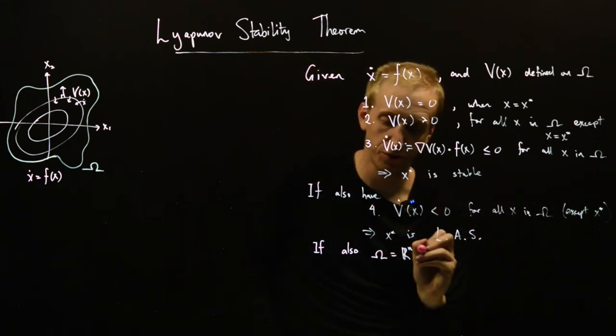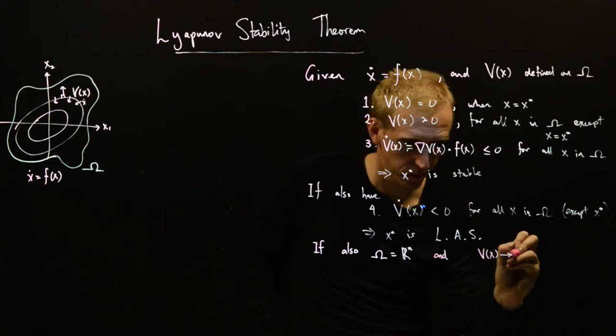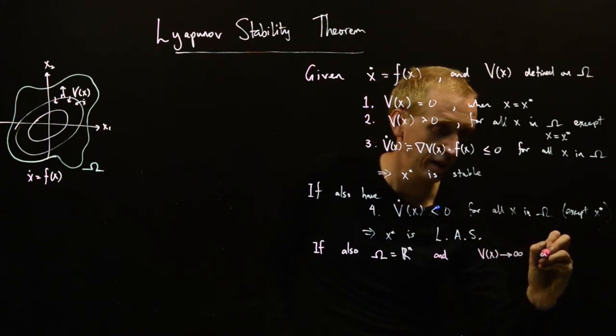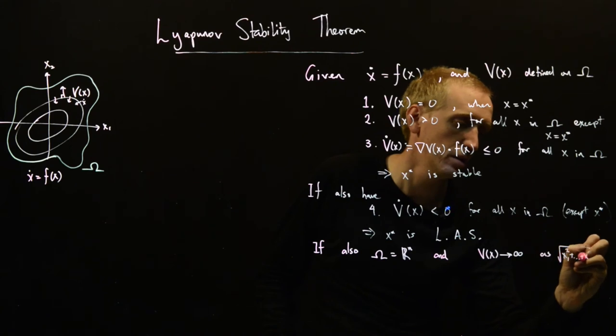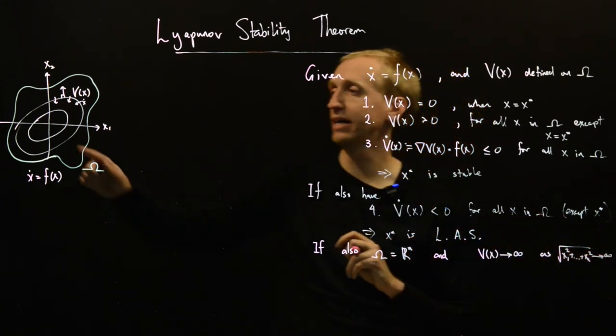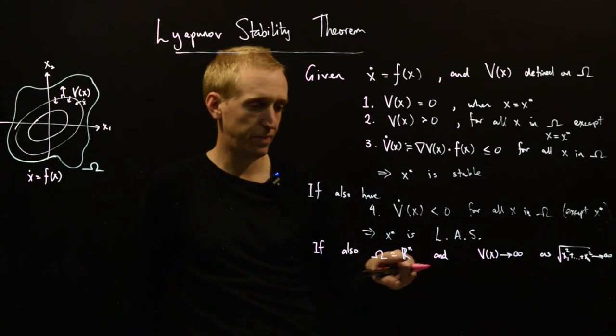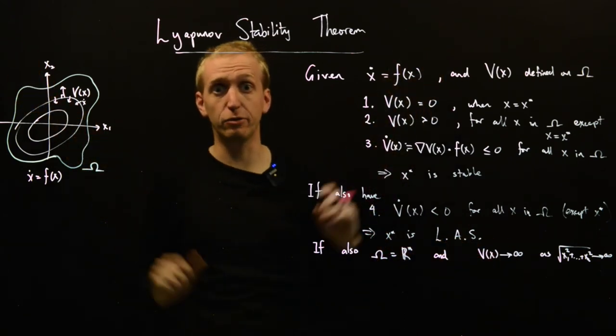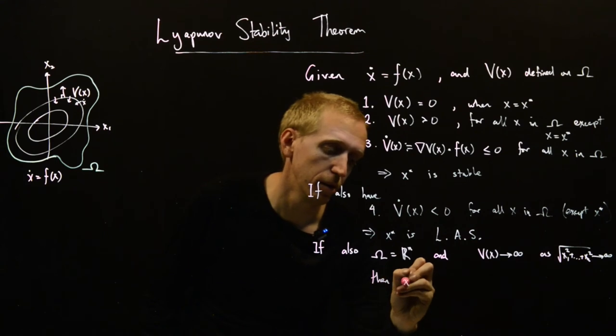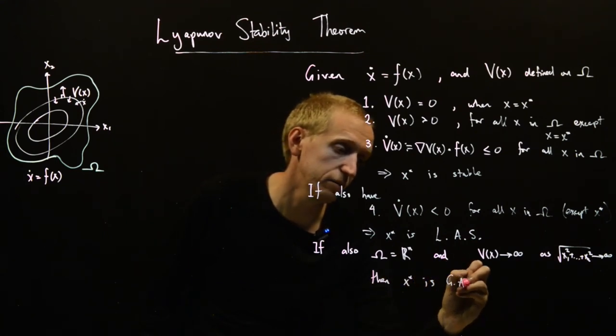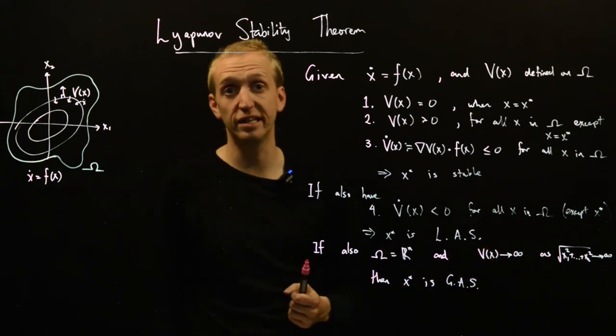And also, so if we also have this and V of x goes to infinity as the length of the vector x, which is just this square root of x1 squared plus xn squared, goes to infinity. So as we move further and further away from the origin, the value of our Lyapunov function gets bigger and bigger and bigger and it grows without bounds. So if we have these things, then x star is globally asymptotically stable. And this is kind of an extra technical condition. It's explained in a bit more detail in the lecture notes.